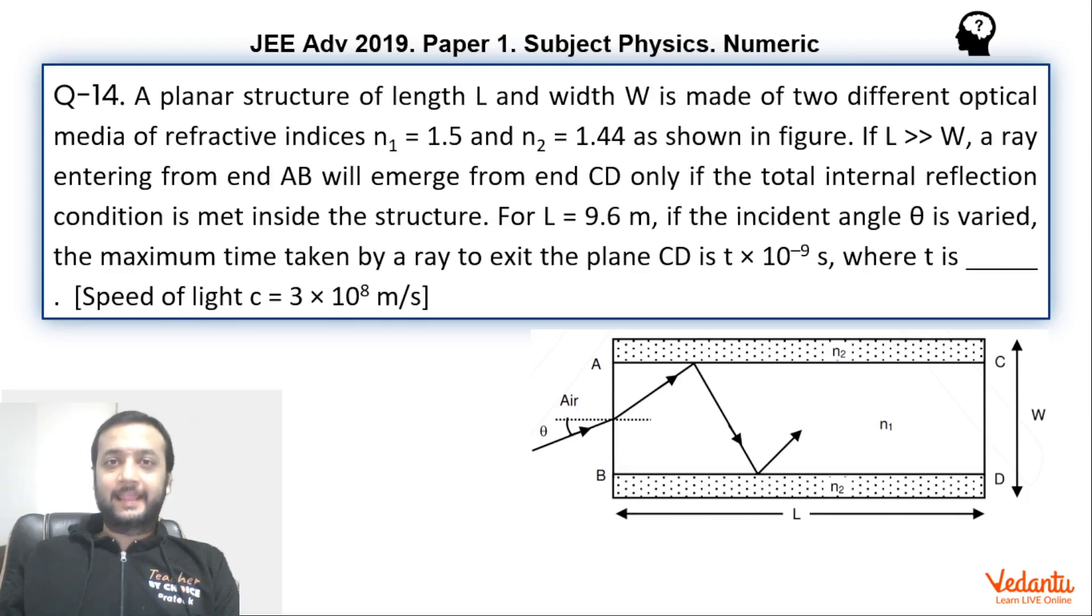Hi dear students! Let's see this question that came in JEE Advanced, Paper 1, Physics in the year 2019. This question was from the topic of TIR and the question was simple and most students would have done this. This was a question based on numeric type.